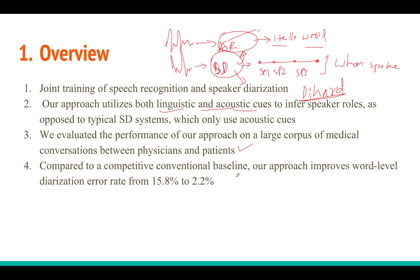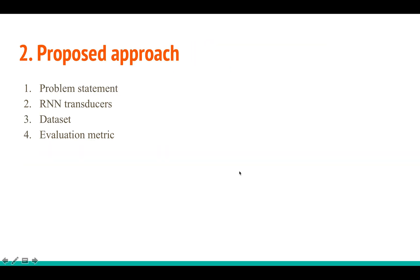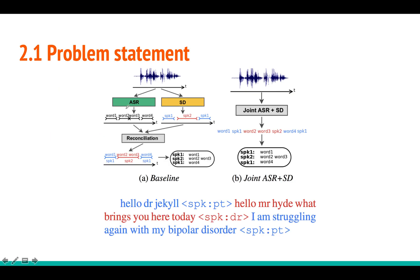For the data they used a large medical communication dataset within Google — 15,000 hours of data, which is very large. Compared to the baseline, they get very good diarization results. They are not measuring DER or WER separately; they are measuring something called WDER, a new metric that takes care of both DER and WER and combines them into one matrix. They are getting very good accuracy. The paper will be explained in four sections: problem statement, RNN transducers, dataset, and evaluation metric.